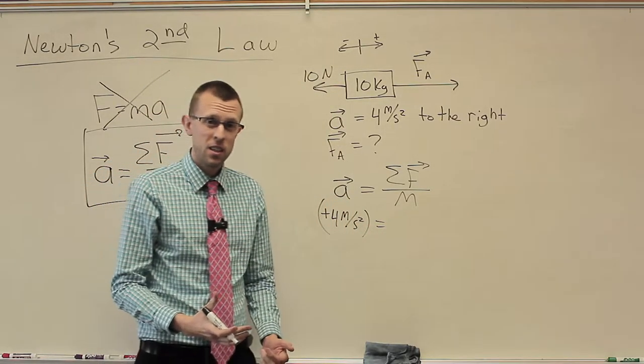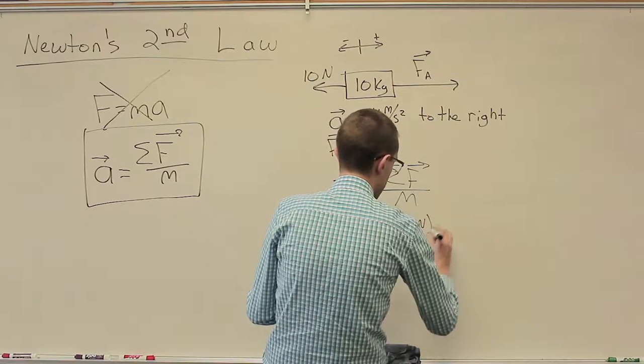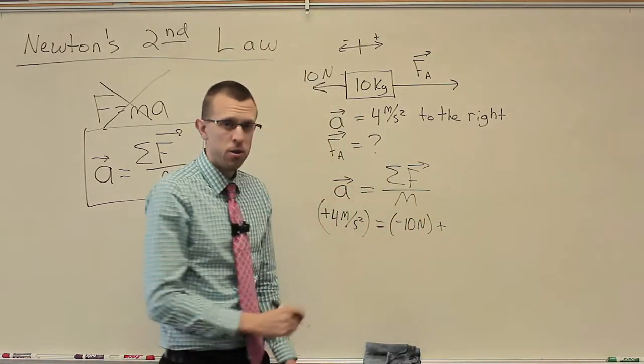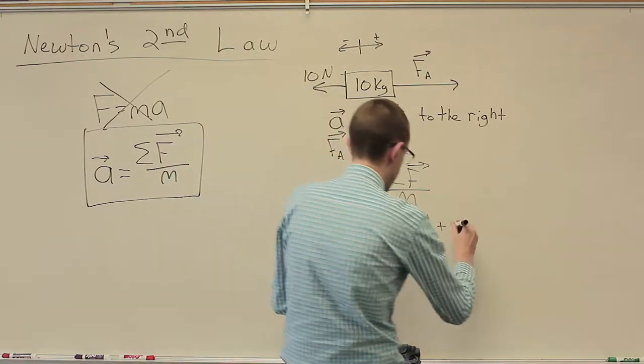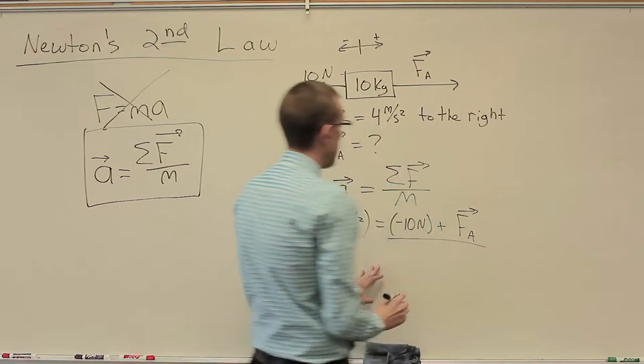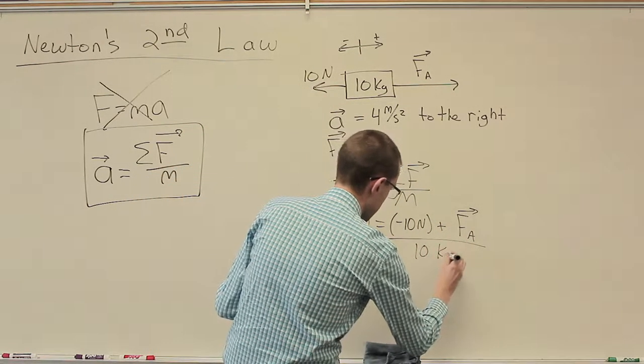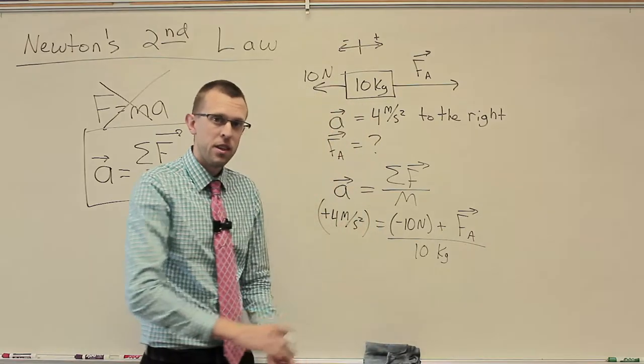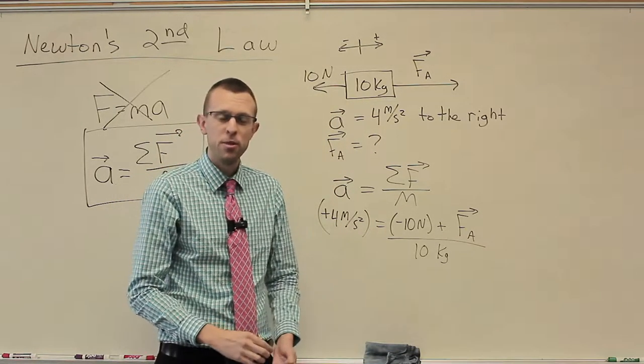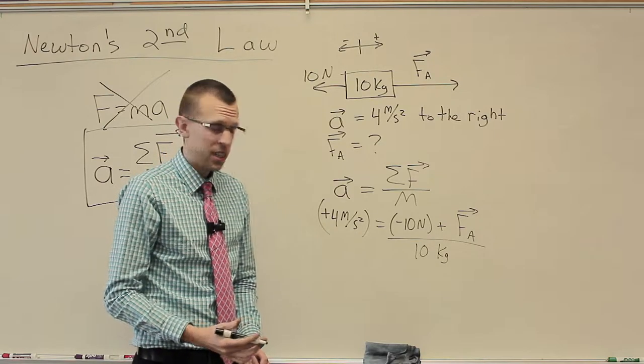So we have 4 meters per second to the right for acceleration. Let's make that positive 4 meters per second squared. I got my squared originally. We've got two forces acting on this thing. We have negative 10 newtons, or 10 newtons to the left. And we have this force that we're calling force A, F A, divided by the mass, which was 10 kilograms.